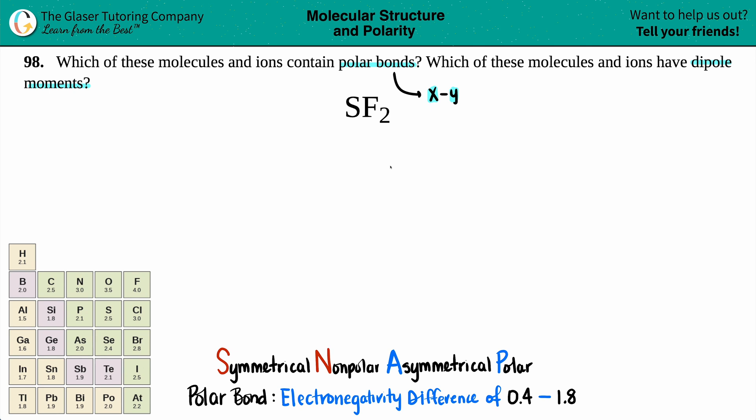So my suggestion to you is, even though they don't ask for it, if you have a covalent compound, just take a few seconds and draw the Lewis structure. Lewis structure is going to have a lot of answers, whether you're dealing with polar, nonpolar bonds, dipole moments, polar, nonpolar molecules, hybridization, molecular geometry, you can get a lot of information from looking at a Lewis structure.